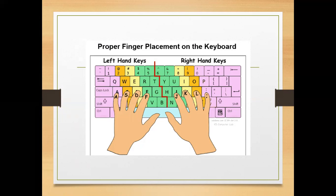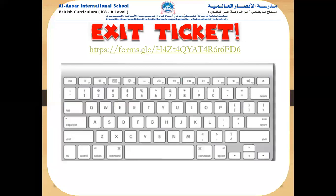Show me how you place your fingers while doing your assignment of typing words with the letters A to E. Here is the exit ticket — it is a Google Form with some questions for you to answer. Answer carefully, remember your lesson so you can answer the quiz and get the marks. Good luck, Grade Ones — see you all next week, bye bye!